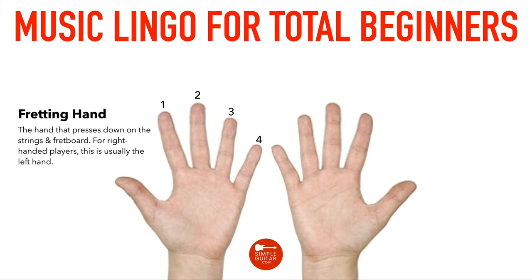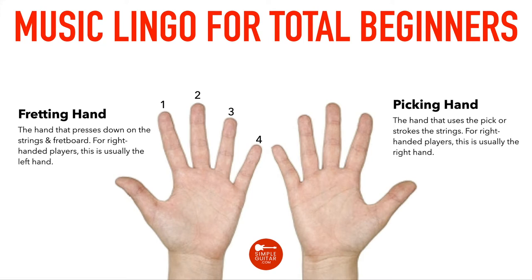Your picking hand is the hand that uses the pick or strokes the strings. For right-handed players this is usually the right hand. Your picking hand doesn't always use a pick — sometimes you play fingerstyle using your fingers. In notation, you may see which finger to use: your thumb is P, index is I, middle finger is M, and ring finger is A. Those letters correspond to the Latin names for those individual fingers.